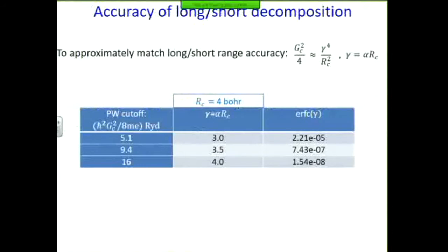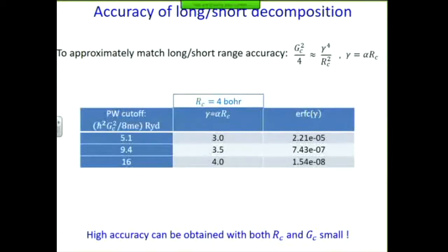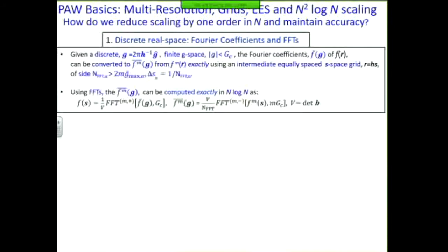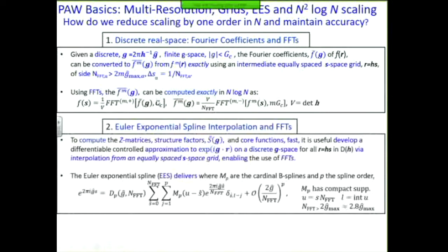This shows how good our truncation term — the exponential term — is: we can get good accuracy with both small R_C and small G_C, which is our goal. The implementation is based on two main theoretical tools. The first is sampling theory: if you have an FFT from real space F(R) to G-space and want to calculate the Fourier coefficients for F(R) to the M-th power, you can do it exactly by sampling F(R) onto an M-times denser grid. For example, to calculate the density (M=2), you use a 4× denser sampling in real space and solve for the density in G-space exactly in O(N log N). The second tool is the Exponential Sum (EES) method. Whenever you calculate Z-matrices, structure factors, or core densities, you encounter a complex exponential term exp(iG·R), where R is the atom position, which can be anywhere in the simulation box and doesn't have to land on regular FFT grids. We use EES to interpolate this term onto the regular equally-spaced FFT grid.